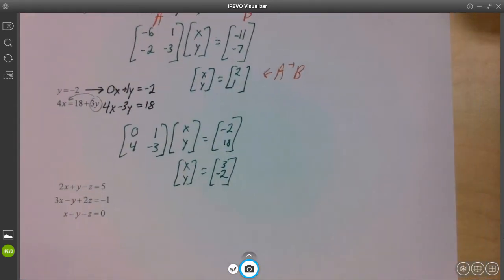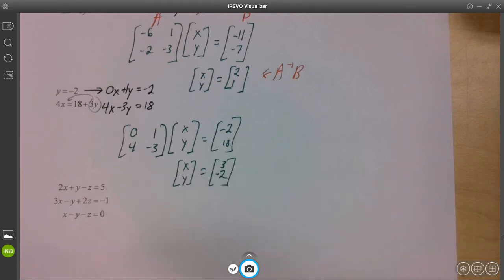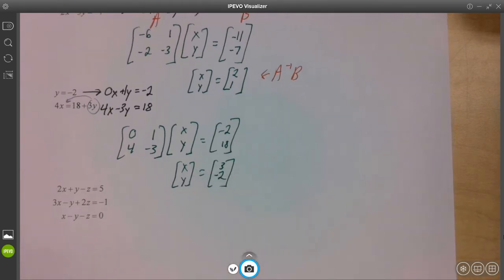And we are going to have a new matrix, and it is zero, one, four, negative three. And then new matrix B, and it is going to be negative two, eighteen. And we need A inverse B. There we go. Three, negative two. And I do want to kind of put this in context a little bit here. Three, negative two. Because here's the deal. If someone said, what's X? You would say, X is three. If someone said, what's Y? You'd say, Y is negative two. They line up. It's beautiful like that.